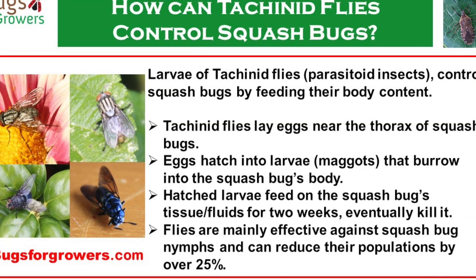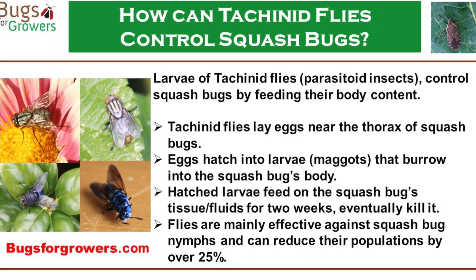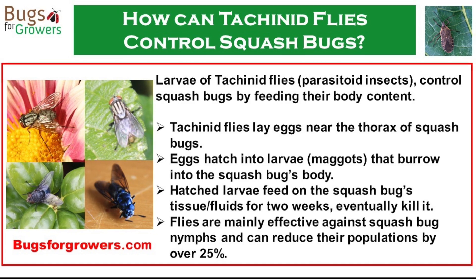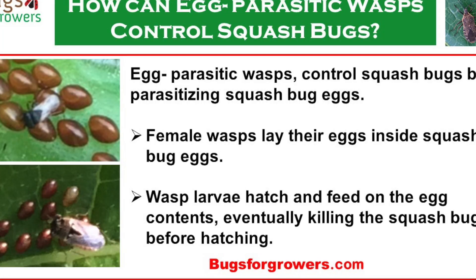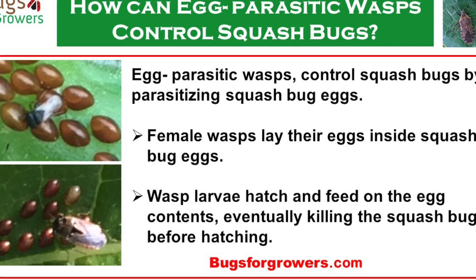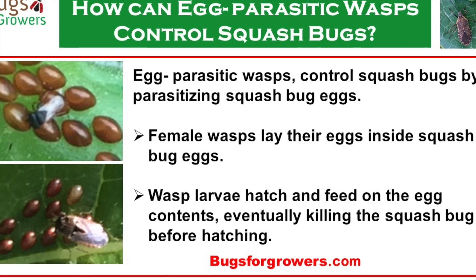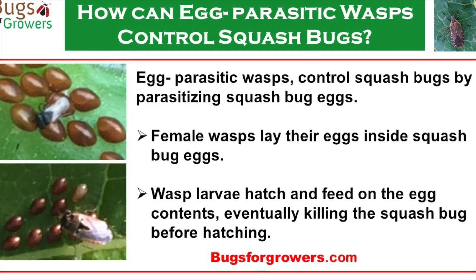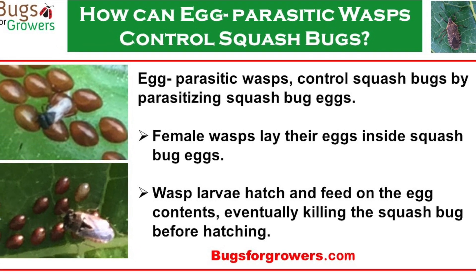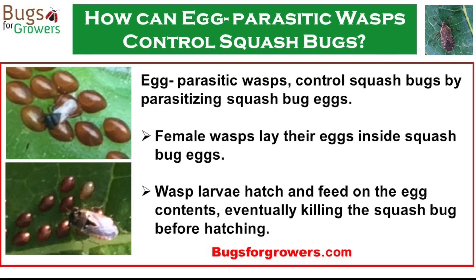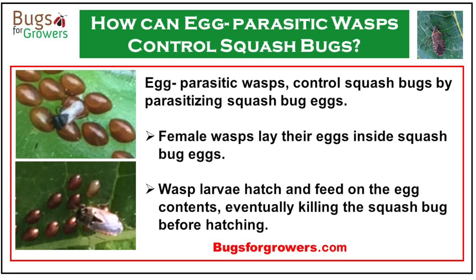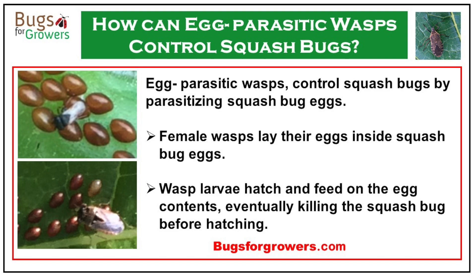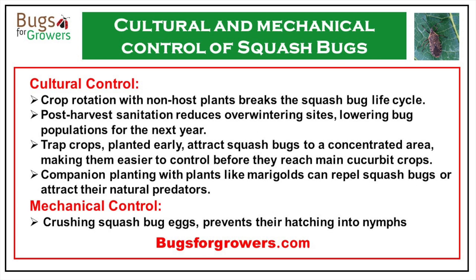Tachinid flies can parasitize nymphs and adult squash bugs, leading to their death. Tiny egg-parasitic wasps lay their eggs inside squash bug eggs and the hatched larvae feed on the developing nymphs, helping to prevent squash bug outbreaks.